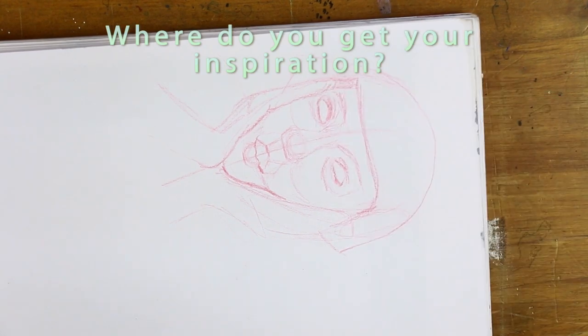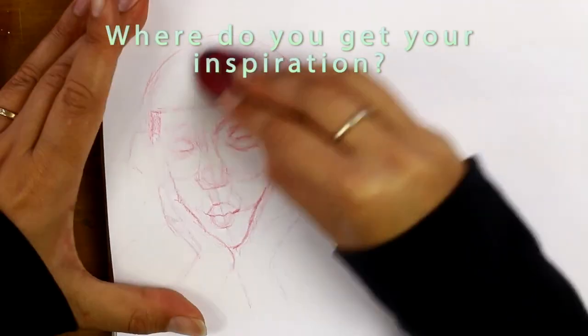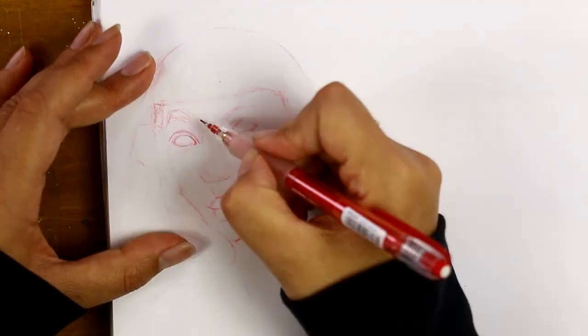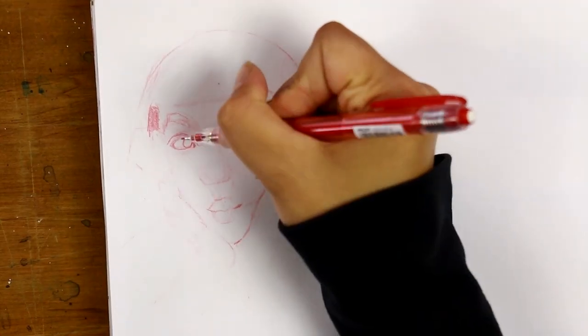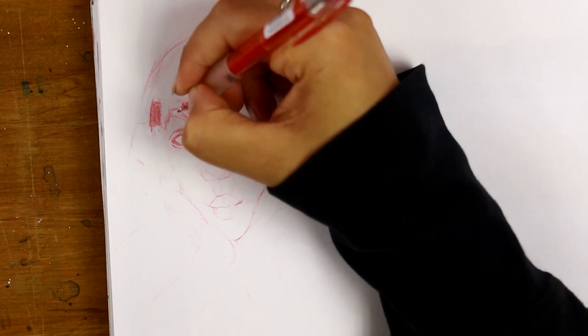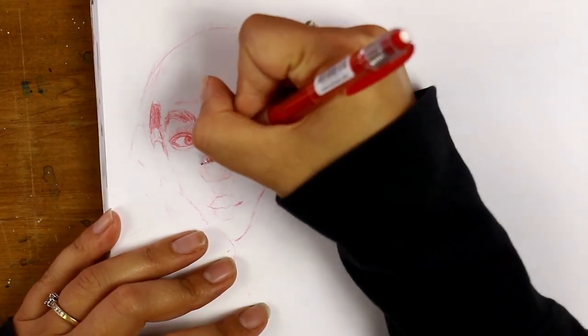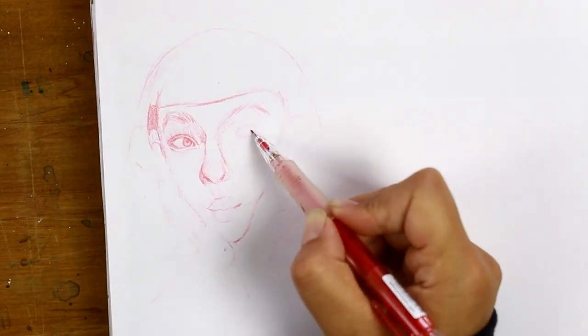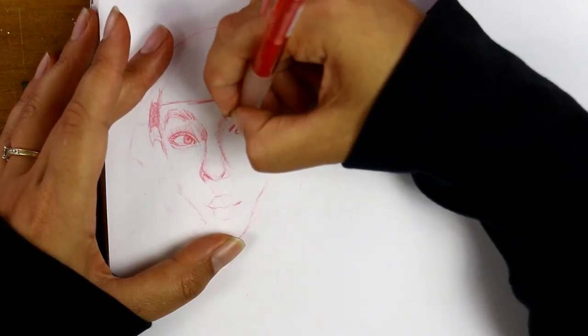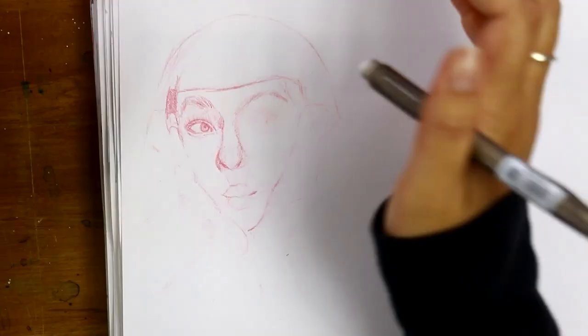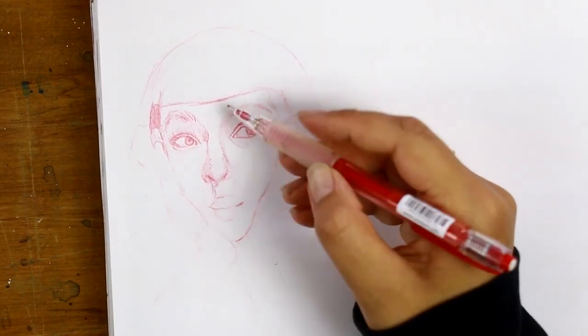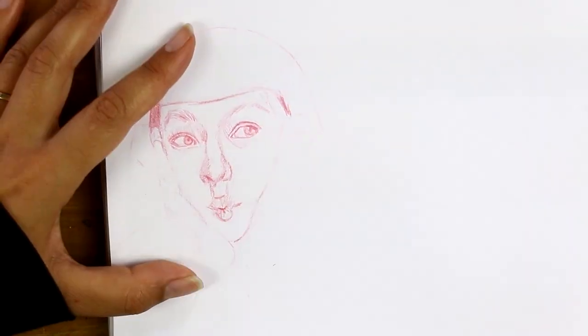Next question is, where do you get your inspiration? For visual references I look at Instagram and Pinterest. I love looking at my favorite artists and seeing what they're up to. I save everything that I see on Instagram or Pinterest to folders which I refer back to later on. So then I look at all these visual references, combine and Frankenstein them together to create something that's my art.